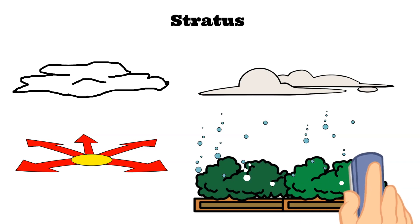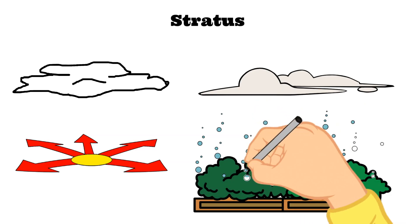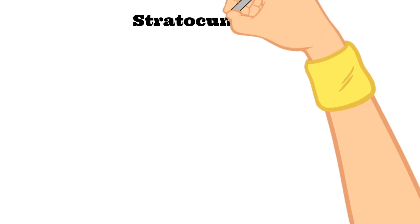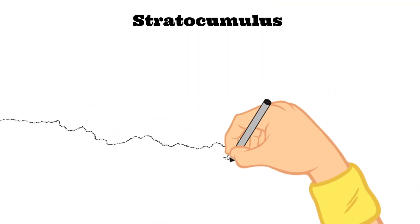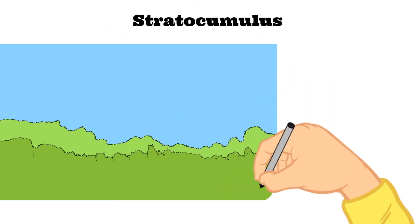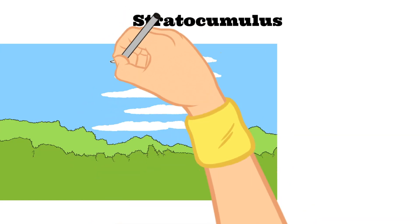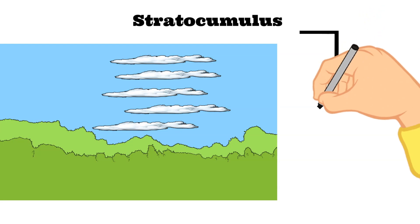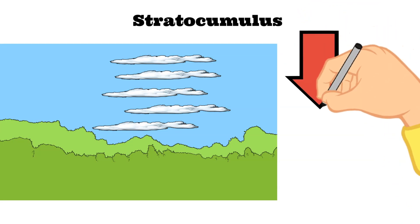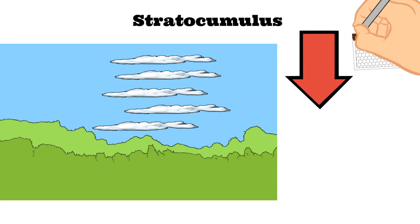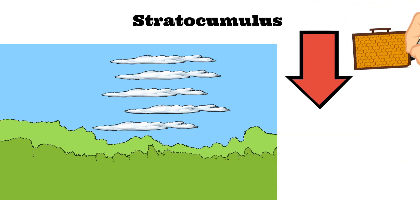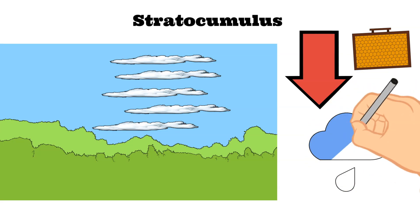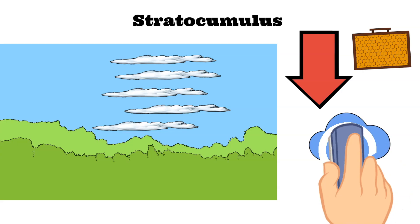Next up, let's talk about stratocumulus clouds. These are the low puffy gray clouds. They typically form in rows with blue sky visible in between them, and it is also said that they have a honeycomb appearance. Rain rarely occurs when stratocumulus clouds are present.